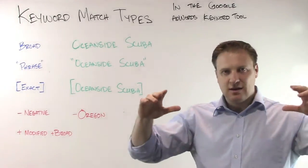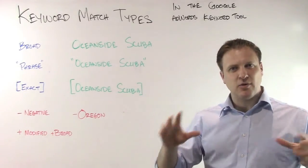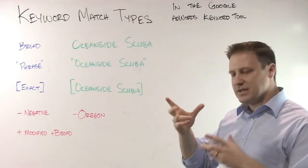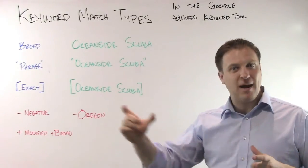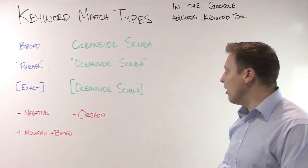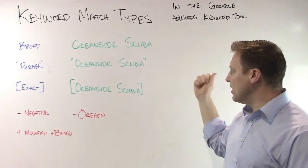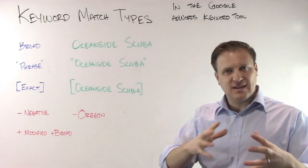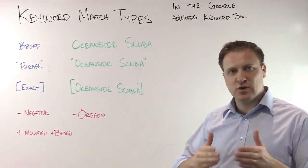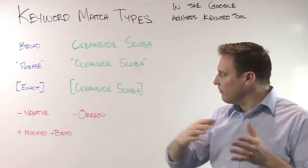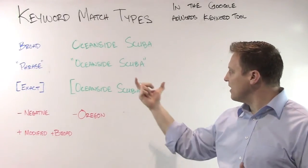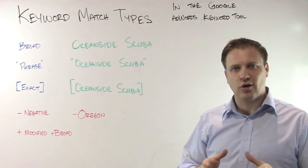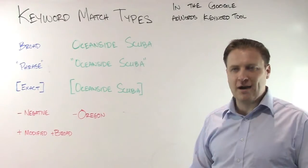Phrase match makes the search volume a little bit smaller. It is that specific phrase in that order — it might have something in front or behind it. So 'the best Oceanside scuba shop' might be included in phrase match. It's basically 'Oceanside scuba' in that exact order, but it may have something before it or after it.